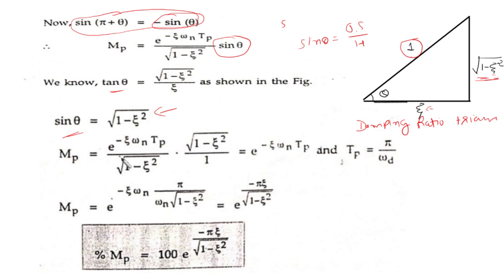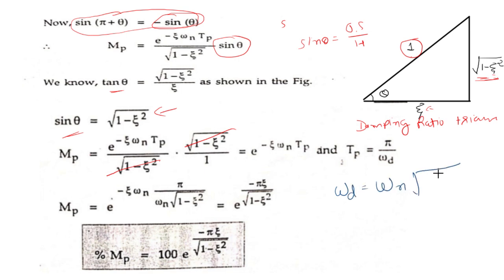Substituting sine θ into our formula, mp becomes e raised to minus zeta·ωn·Tp divided by under root 1 minus zeta squared, multiplied by under root 1 minus zeta squared upon 1. The under root 1 minus zeta squared terms cancel, leaving e raised to minus zeta·ωn·Tp. Now putting Tp = π/ωd and ωd = ωn·under root 1 minus zeta squared, mp becomes e raised to minus zeta·ωn multiplied by π upon ωn·under root 1 minus zeta squared.